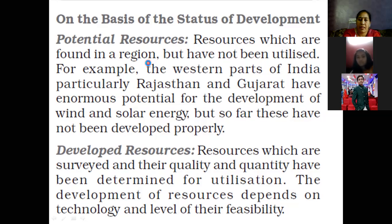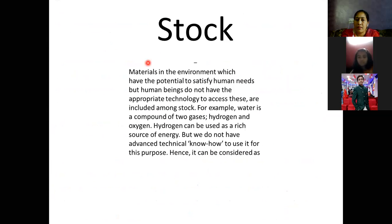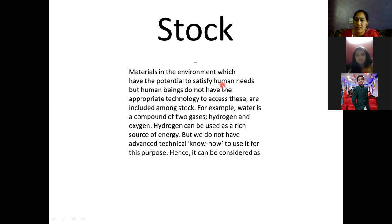Third is stock. Stock refers to materials in the environment which have the potential to satisfy human needs, but human beings do not have the appropriate technology to access them. Something is present in the environment and can satisfy our needs, but we don't know how to use it — that is stock. For example, water is made of hydrogen and oxygen, and we know that combining them can produce hydroelectricity. We have many waterfalls but don't fully use them — so these are considered stock, which in the future we can use with the help of technology.